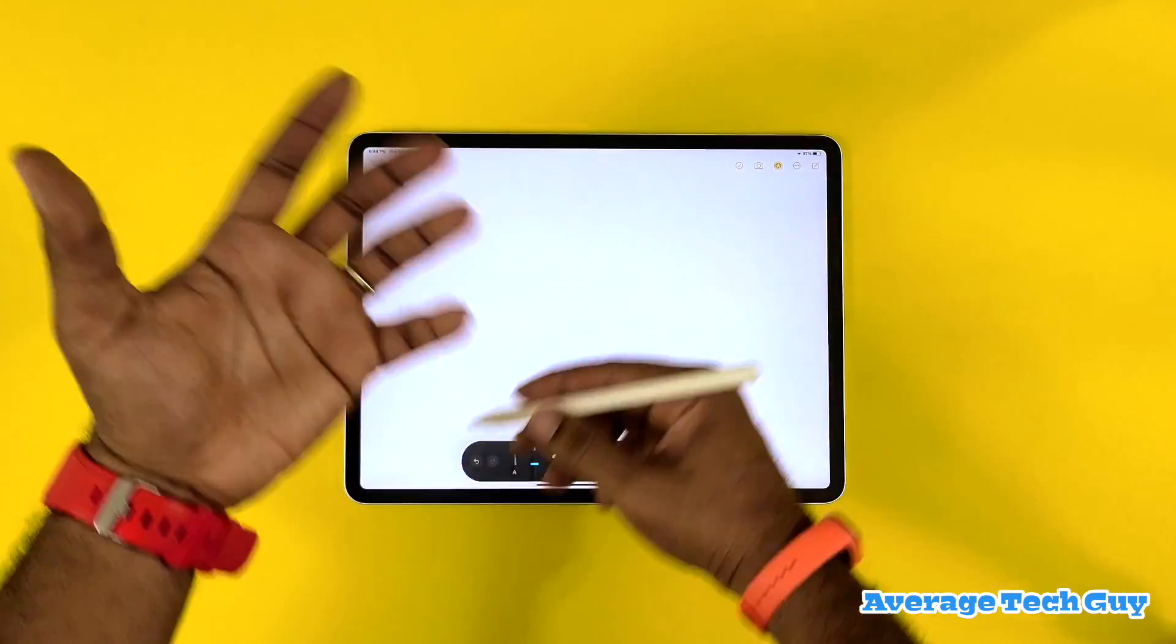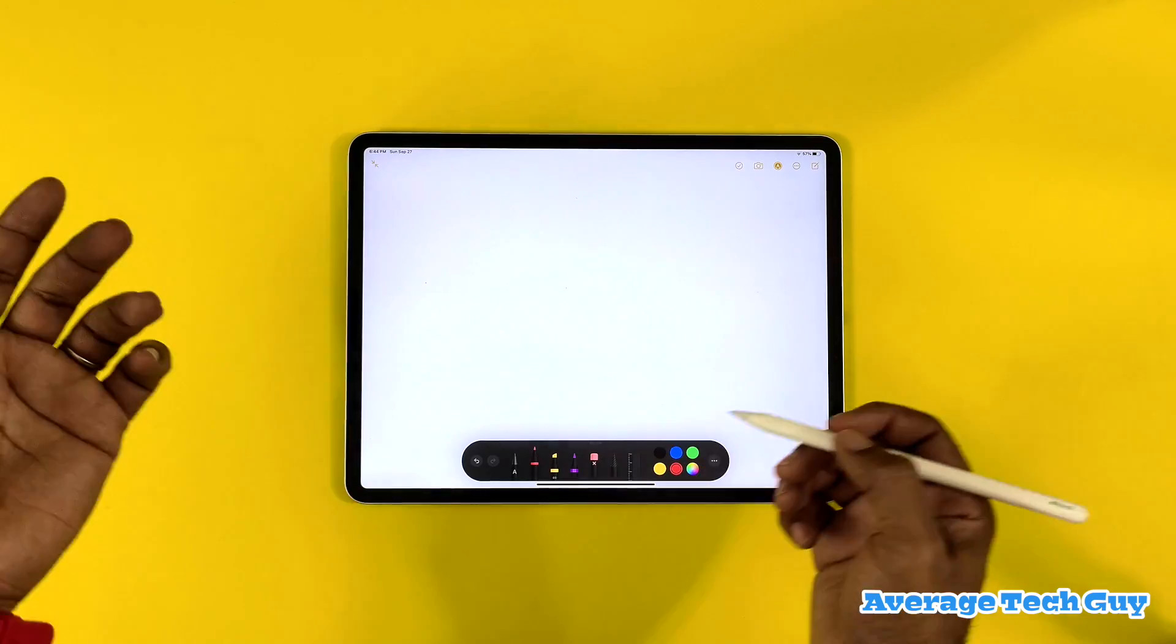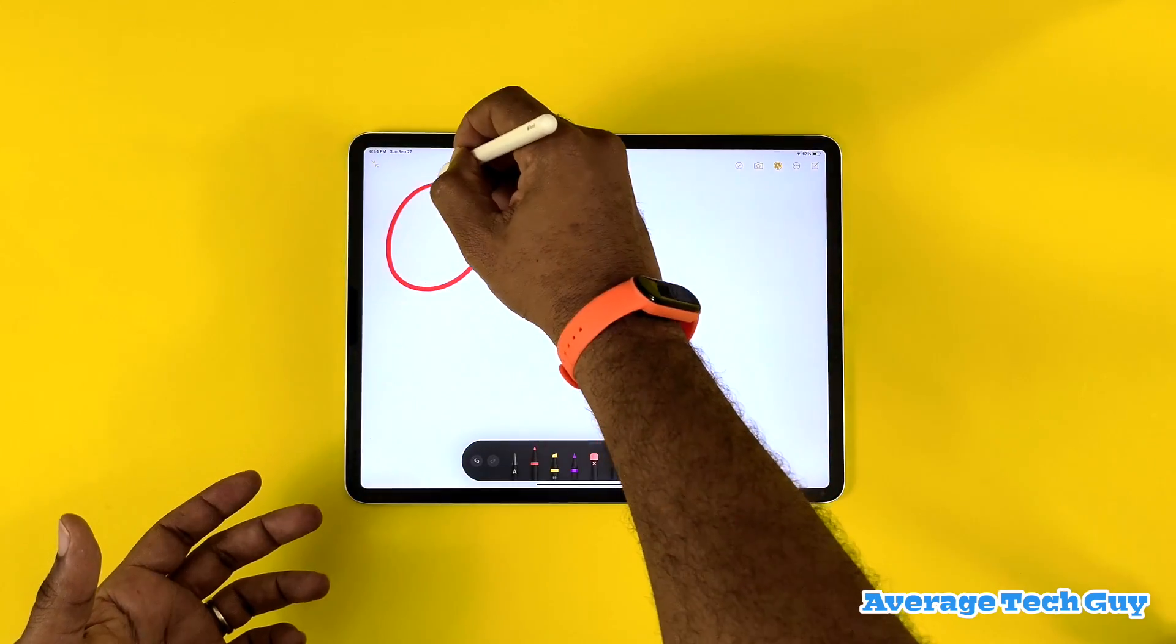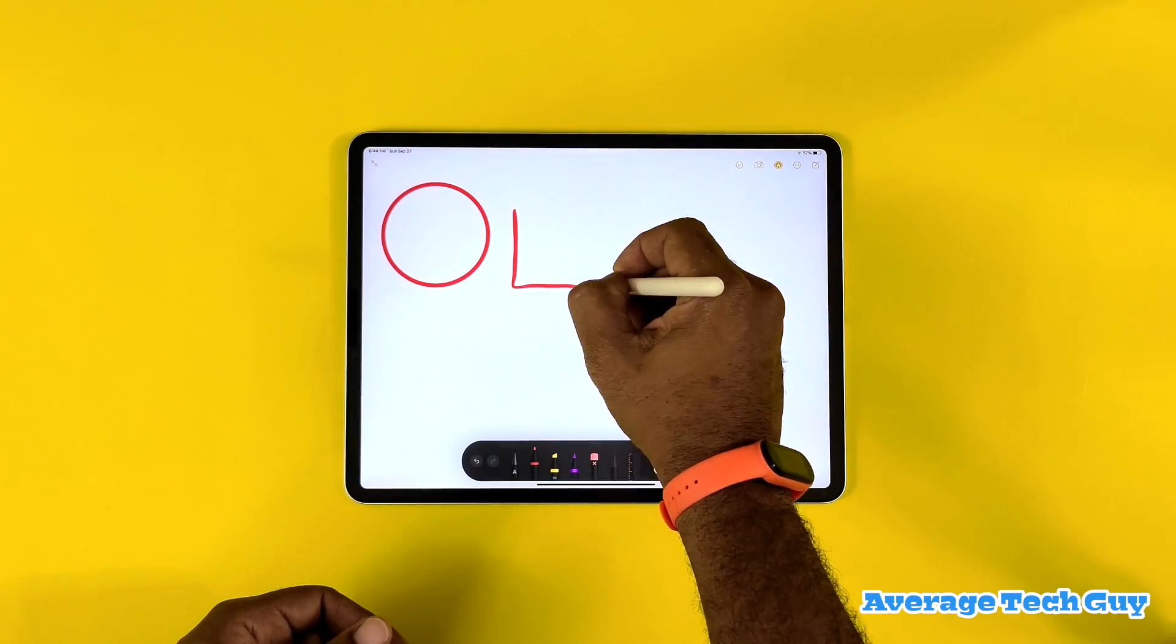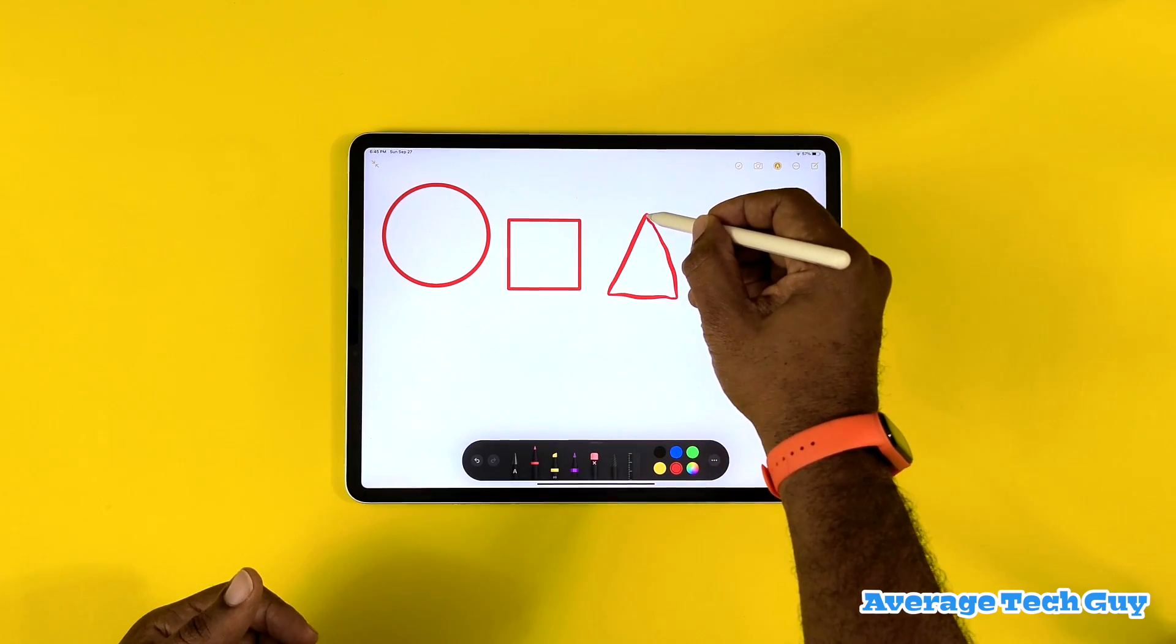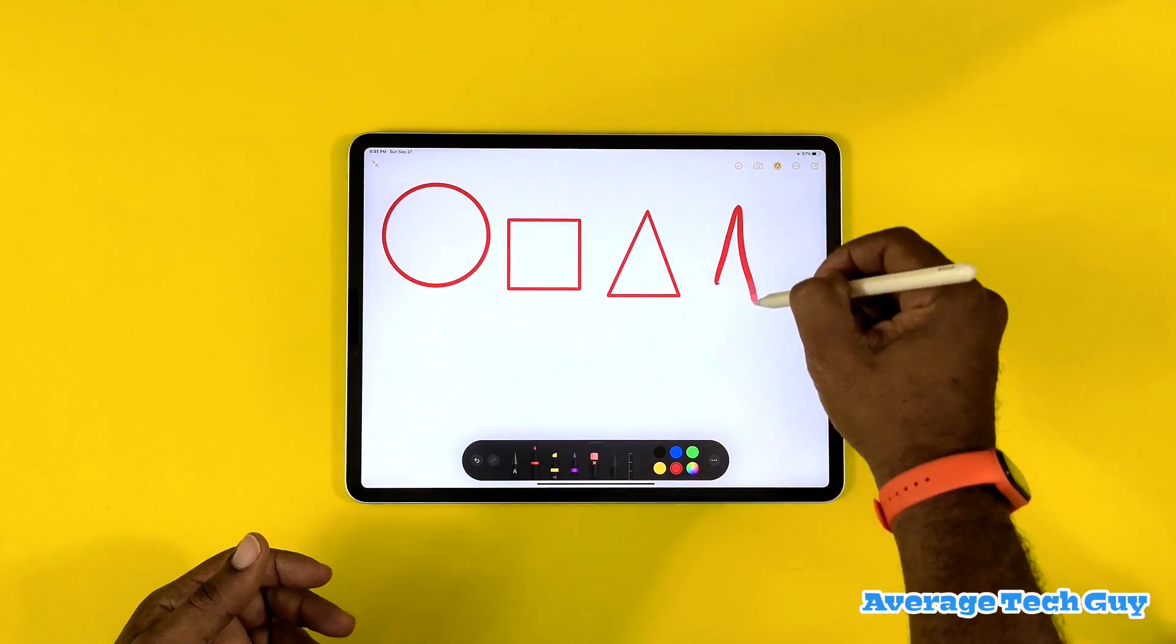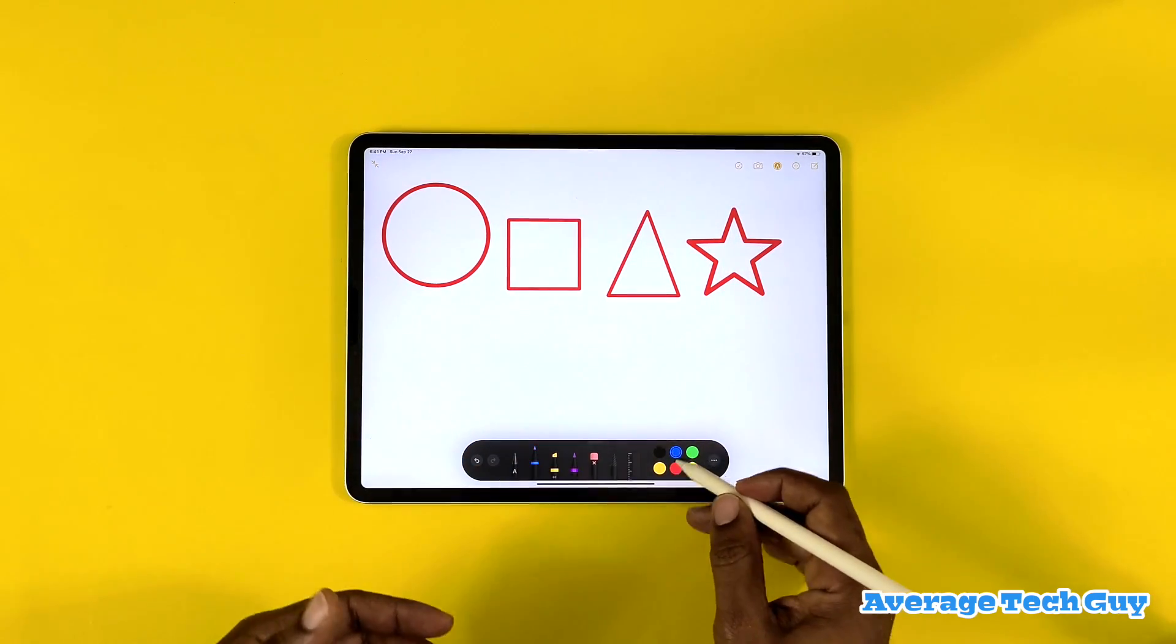First color we're going to use is red, and we're going to draw a circle. We know that circles will become circles, also know that squares will become squares, triangles will become triangles, and stars will become stars.